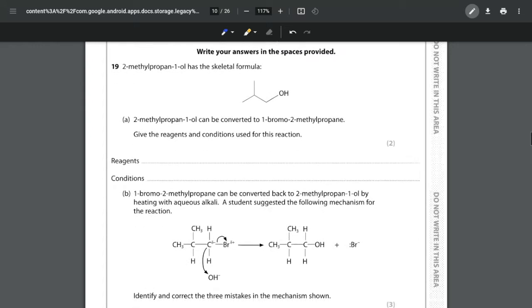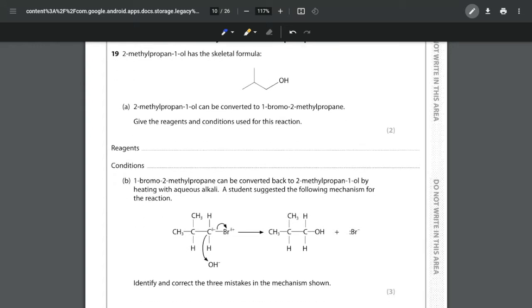We are told that we have 2-methyl-propan-1-ol and we are given the skeletal formula. We can convert this to 1-bromo-2-methyl-propane and we want to give the reagents and conditions. We need to think about what's actually happening here. This is a bromination reaction, going from the alcohol to a bromo-alkane.